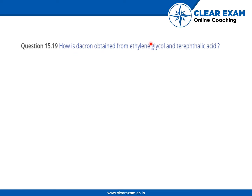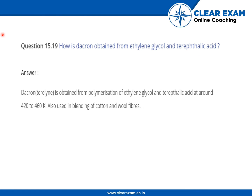Dacron is a polymer with monomers ethylene glycol and terephthalic acid. When Dacron, or Terylene, is obtained from the polymerization of ethylene glycol and terephthalic acid at around 420 to 460 Kelvin temperature, it is also used in blending of cotton and wool.